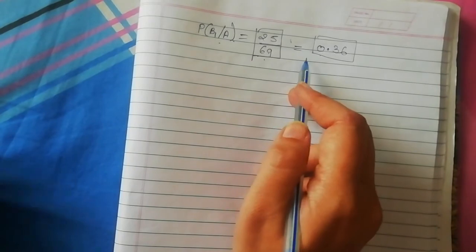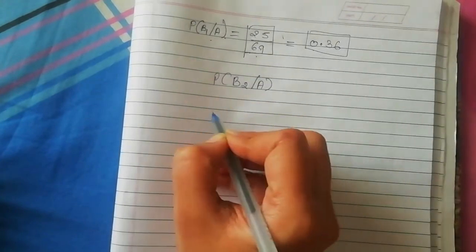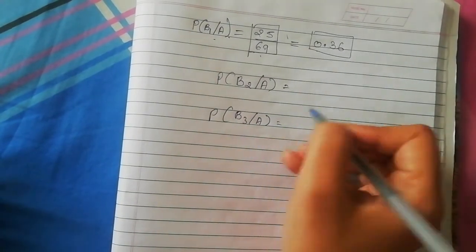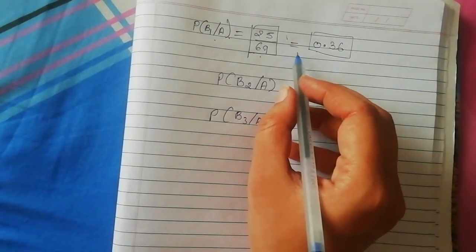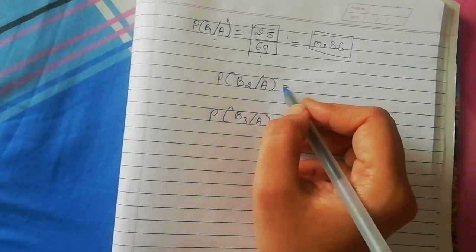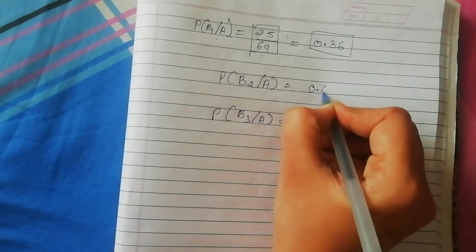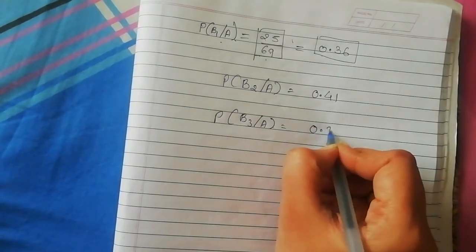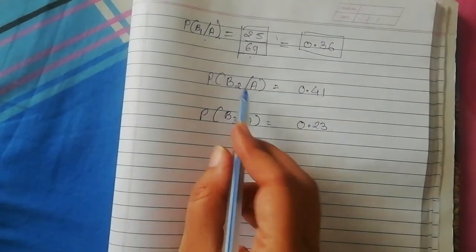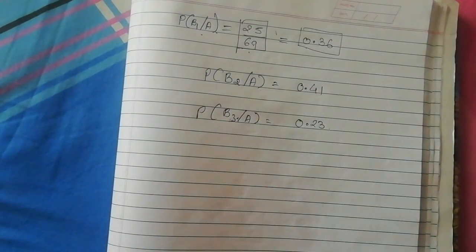Similarly, you can find the probability for machine M2 and machine M3. The final answers are: P(B2|A) = 0.41 and P(B3|A) = 0.23. I hope based on this video you can calculate these two probabilities. Thanks for watching, and we will meet soon in the next session.